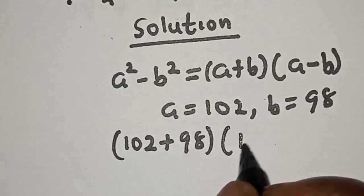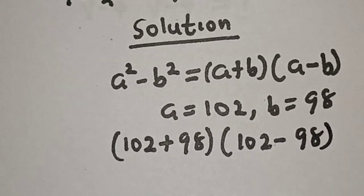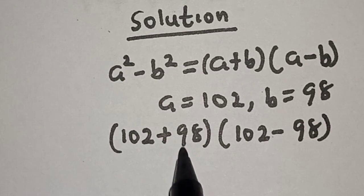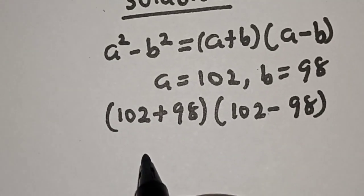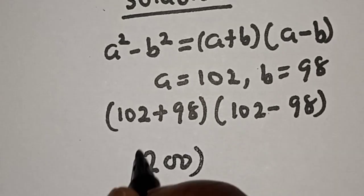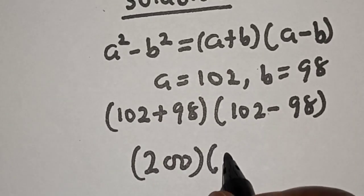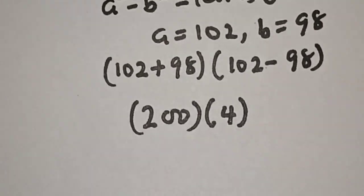Now if you add this plus this, this is 200 multiplied by 102 minus 98, which is 4.